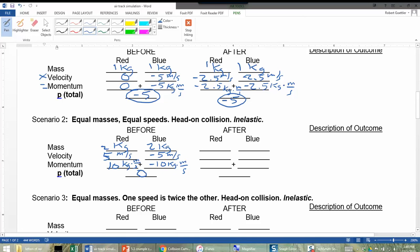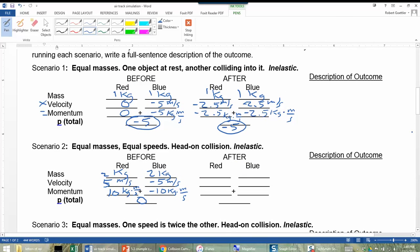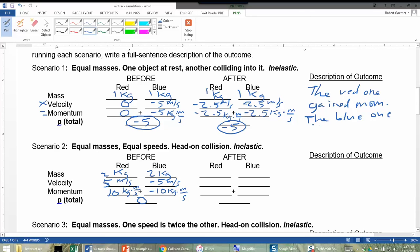One thing I forgot to do in our first scenario is to write a description of the outcome. So we can write that the red one gained momentum. The blue one lost momentum. How do we know that? Because we can see that they slowed down, or that the blue one slowed down, and the red one sped up.